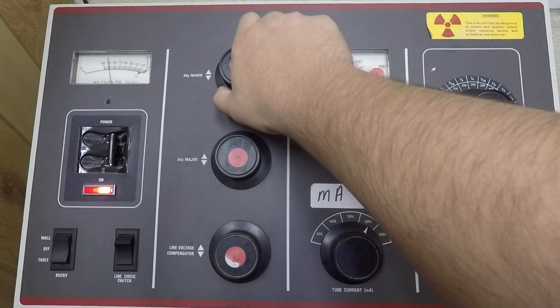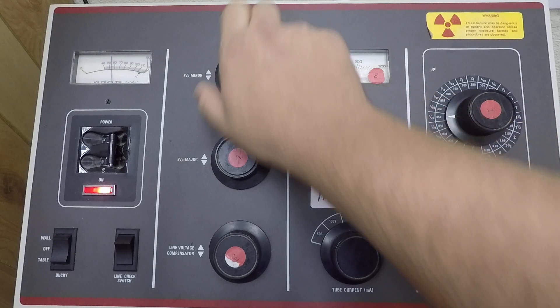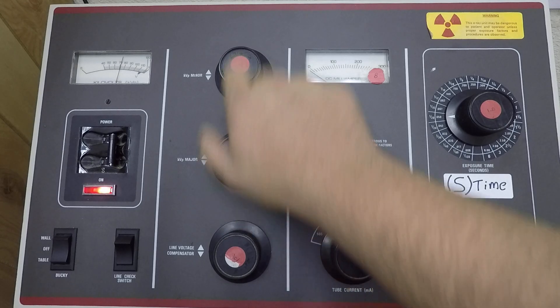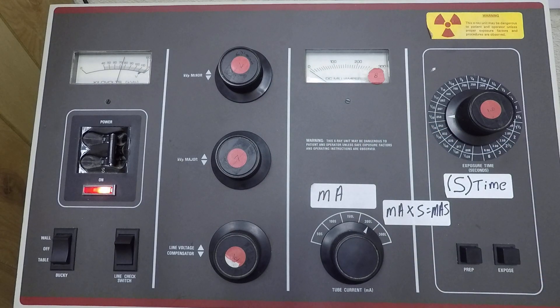The minor adjustment moves us by one to two KV at a time. So if I need to make big changes, I use the major adjustment. If I need to make small changes, I use the minor adjustment. A lot of other consoles will just have a KVP selection, in which case you'll just set it.